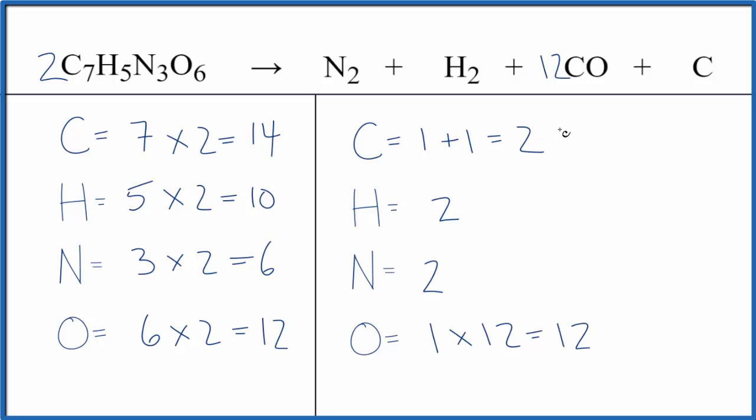And now for the carbon, it makes a little more sense. So I need 14 total carbons. I have 12 here plus, let's just put a two here. That gives us 14.